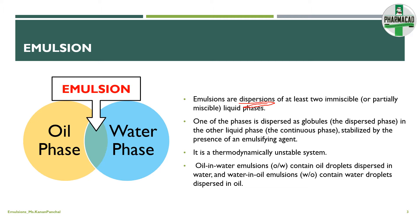A dispersion of what? It's a dispersion of two immiscible or partially miscible liquid phases. One of the phases is dispersed as globules and it is called as the dispersed phase, and the other phase, which is again a liquid, is the continuous phase.